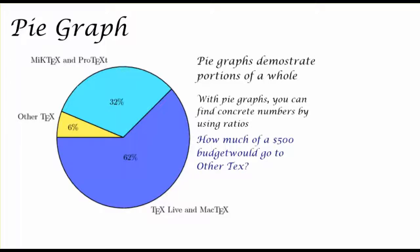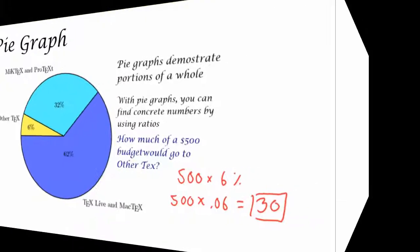So take a look at our application question. In this case, we're wondering how much of a $500 budget would go to the category other text. So in order to solve this problem, I would take that budget of $500 and multiply it by the 6% that other text represents of the whole 100%. So 500 times 0.06 to represent 6%. And after doing the multiplication, 500 times 0.06 would give me 30. So the budget amount that would go to other texts would be $30.